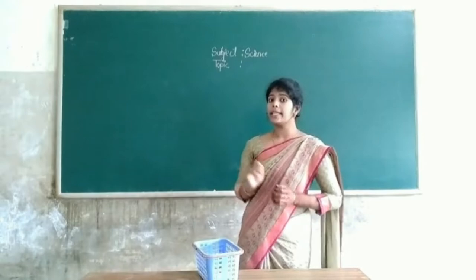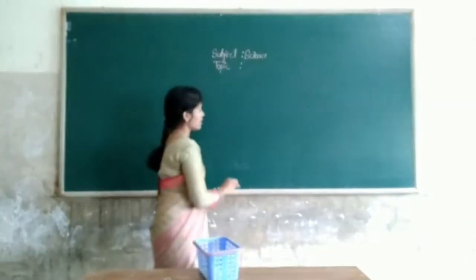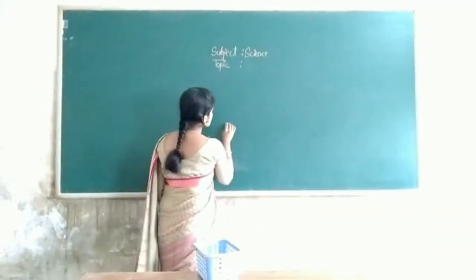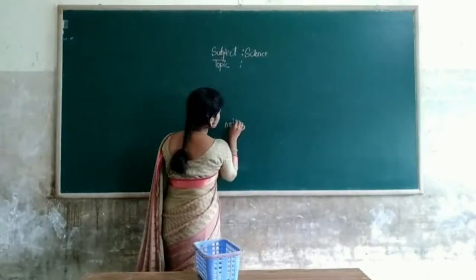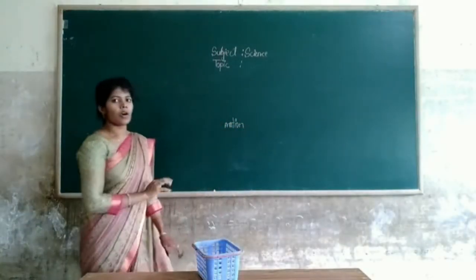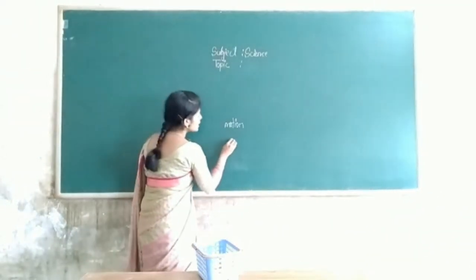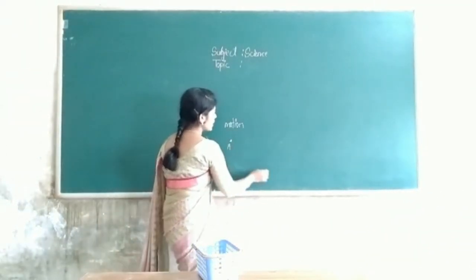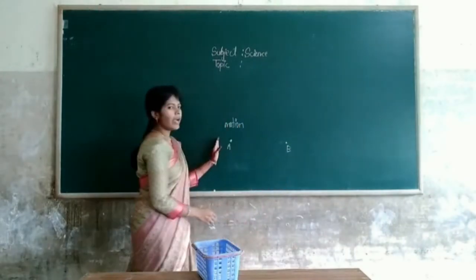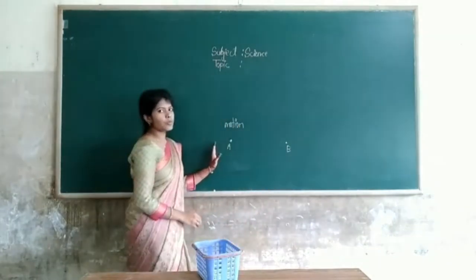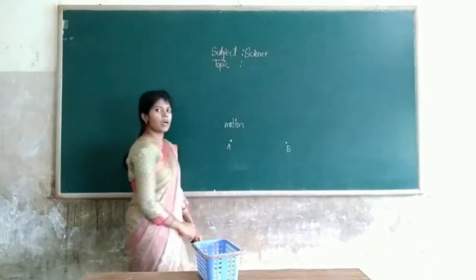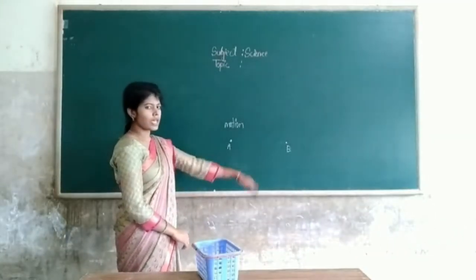The change in position means movement takes place. We call it motion. Another word for movement is motion. Just like this — here point A, another point B. If I want to move from point A to point B, that is movement and motion.